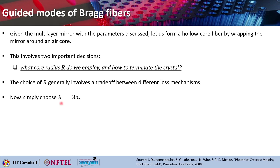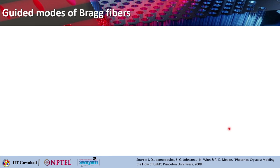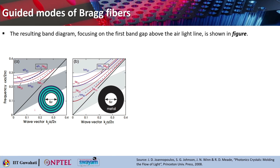We will simply choose R equals 3A where A is the periodicity. As for the termination, let us end the crystal at R with half of a high index layer. Using a high index layer on the inner surface would confine modes in the core more strongly, and using half of a layer would eliminate the troublesome surface states that you have seen at the beginning of the lecture today. The resulting band diagram, focusing on the first band gap above the light line, you can see from here.